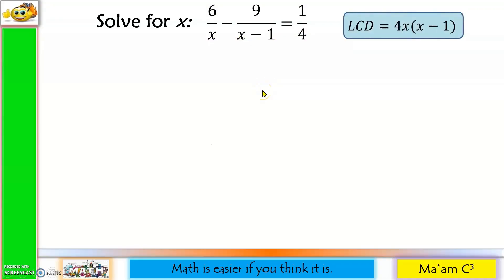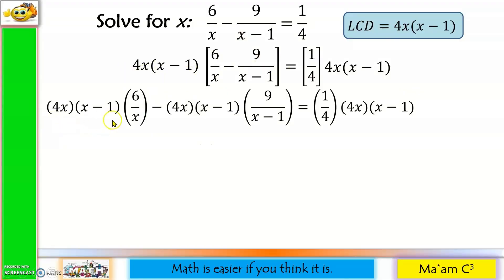And then, multiplying both sides with this LCD. Other students are having difficulty multiplying in this manner, so what you can do is distribute the LCD on each term. So I have the LCD multiplied with 6 over x. Copy minus. LCD again. Multiply with 9 over x minus 1. Equals 1 fourth multiplied again with the LCD. In this manner, you can easily see which can be canceled out in each group. For this group, we can cancel out x. So we will be left with 4 and then x minus 1 and then 6. For this one, we can cancel out x minus 1. Then we have 4x times 9.